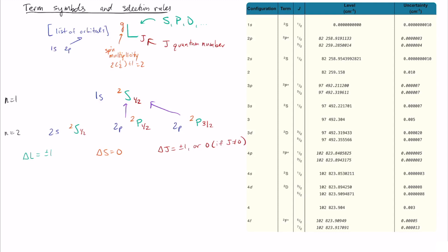Now let's take a look at some real data. This is reference data for the atomic energy levels compiled by NIST, the National Institute of Standards and Technology, which is a federal agency and physical sciences lab that performs an amazing service by compiling reference data like this, including conversion constants and physical constants.